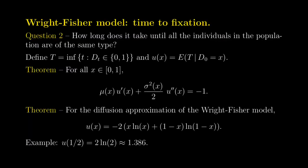We were also able to compute exactly the expected time to fixation — not for the Wright-Fisher model itself but for its diffusion approximation. We found that starting with a fraction X of type 1 individuals, it takes on average −2X·log(X) + (1−X)·log(1−X) units of time for the process to fixate in a configuration where all individuals are of the same type.